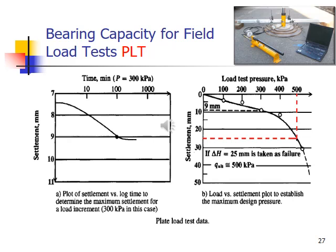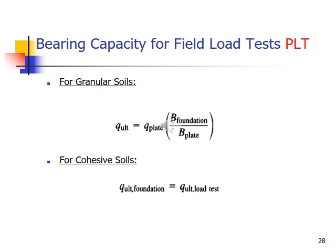Bearing capacity from field load test PLT. PLT means plate load test. Once the plate load test is there, load test with pressure versus settlement is here, and the settlement is a 25 mm settlement. What is the load pressure it requires? It is calculated. The plate load test is a field test. You can do it for shallow foundations only. Bearing capacity from field load test PLT is given. Q ultimate is equal to Q plate into breadth of foundation by breadth of plate. For cohesive soils, Q ultimate of foundation is equal to Q ultimate load test directly. Otherwise in granular soils you have to interpret it with breadth. In cohesive soils it is not required.